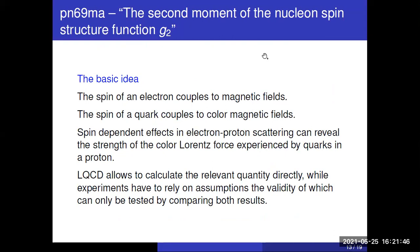Now let me turn to the second problem we looked at, and that has to do with this funny spin structure function g2. The basic idea is easy to explain. The spin of the electron couples to the magnetic field. And in the same way, the spin of a quark couples to the color magnetic field. Spin-dependent effects which you observe in electron-proton scattering can reveal the strengths of these effects. And thus, for example, the strengths of the Lorentz force acting on quarks.